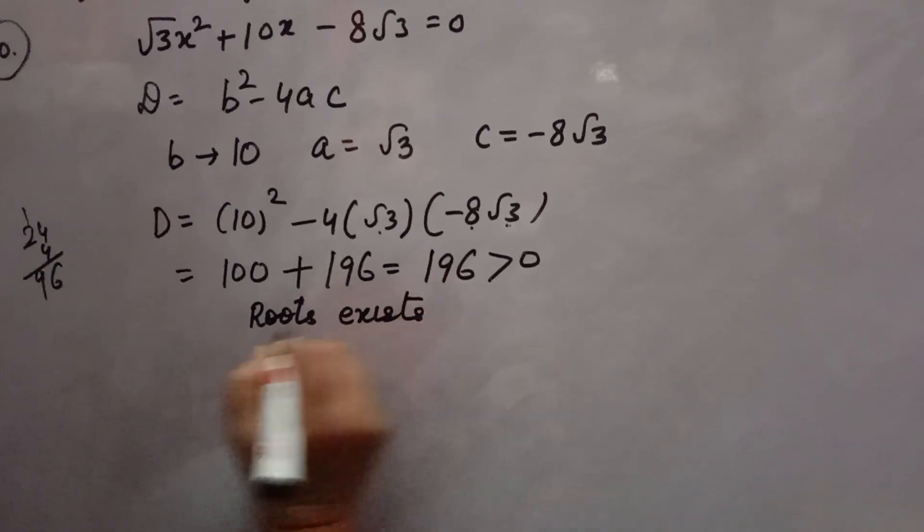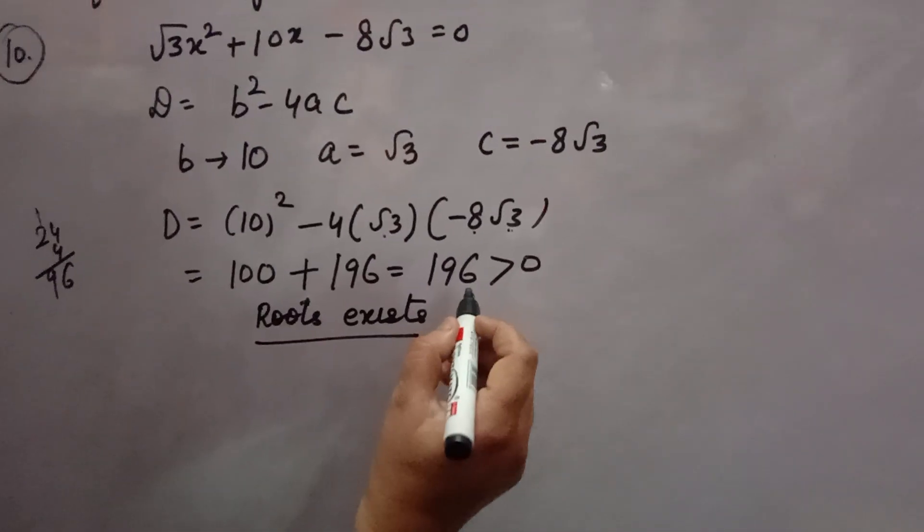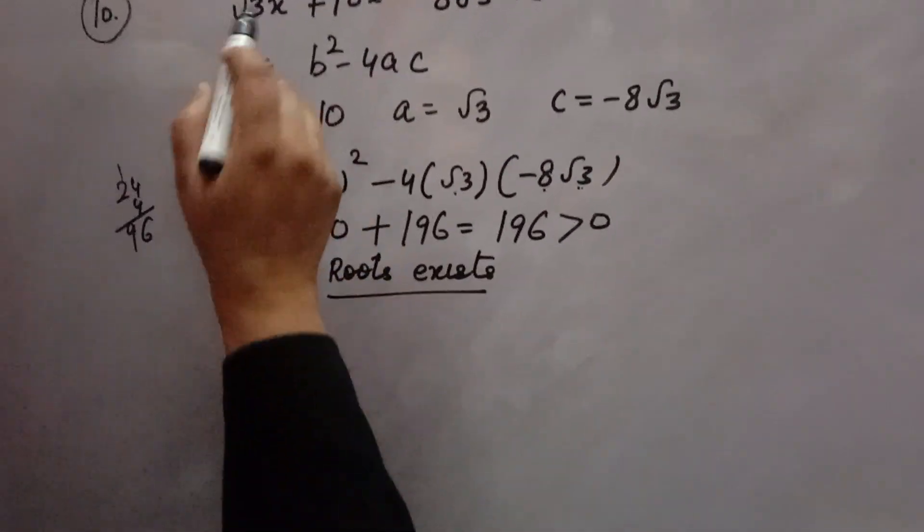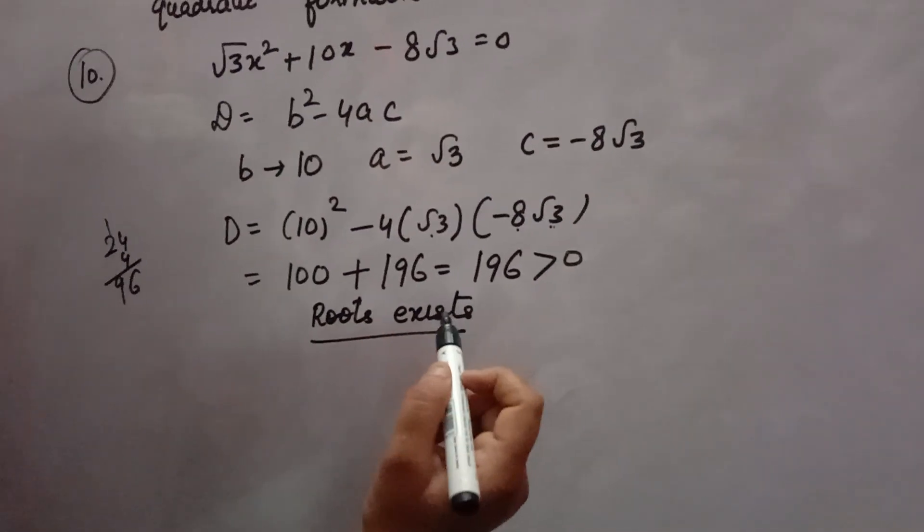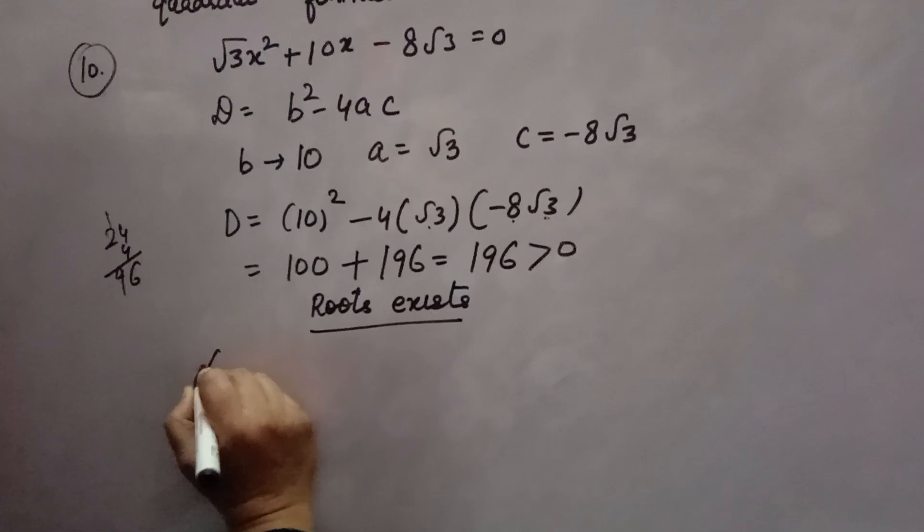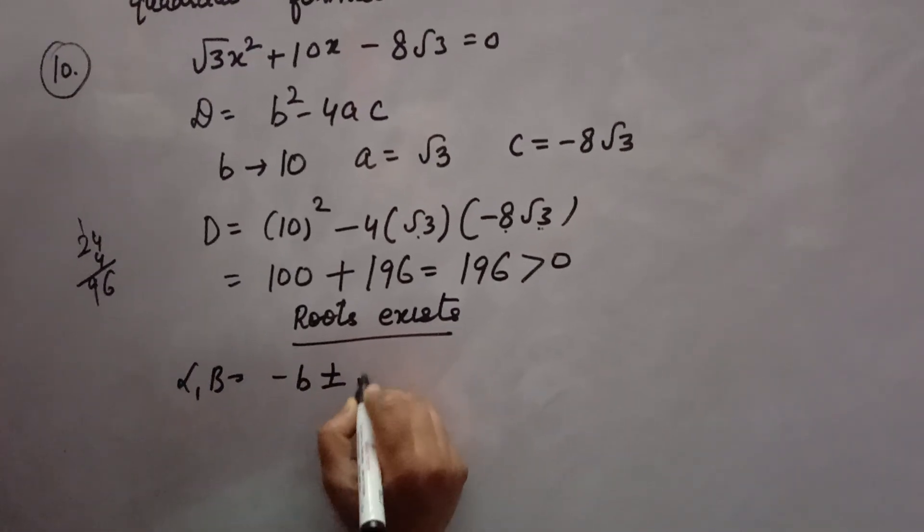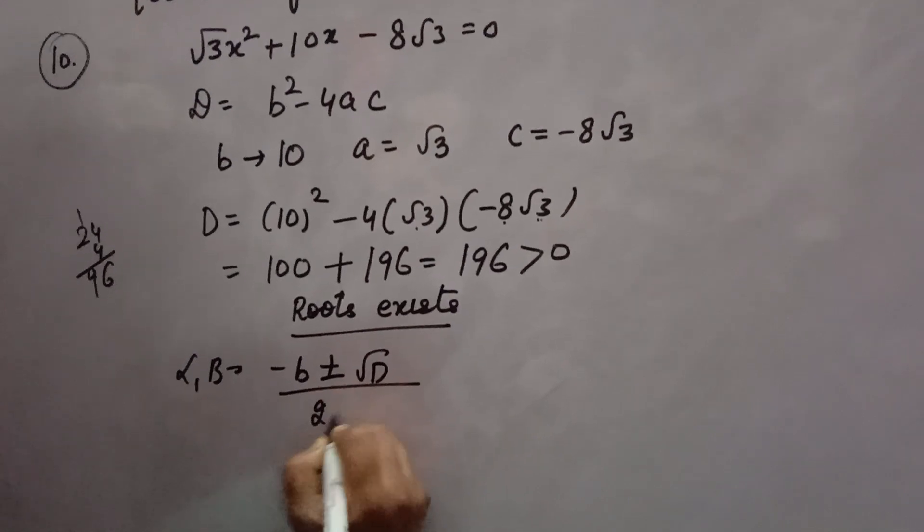If it is 0, then roots exist. In this case, roots exist. We always find two roots of quadratic equation. Now, how to find the roots? Suppose alpha, beta is the root. It is minus b plus minus under root of d over 2a.